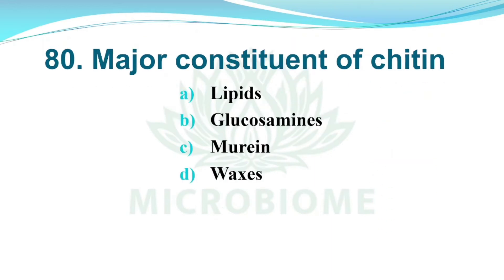And next, the major constituent of chitin. Options: A) Lipids, B) Glucosamides, C) Murin, D) Waxes. The right answer is Option B, Glucosamides.